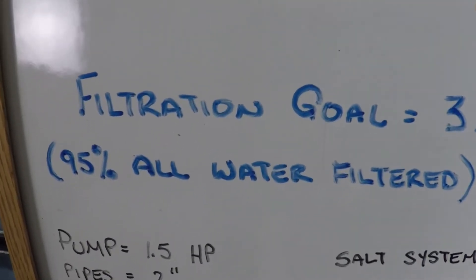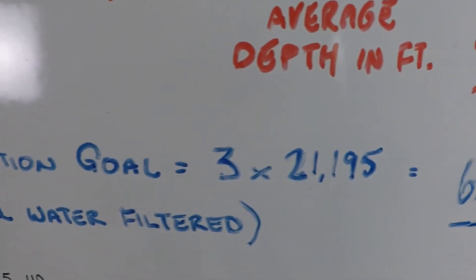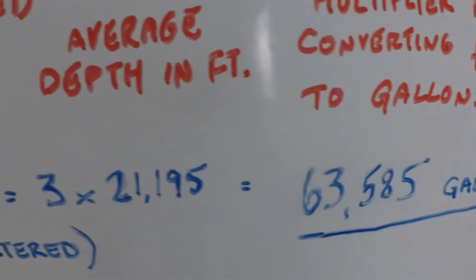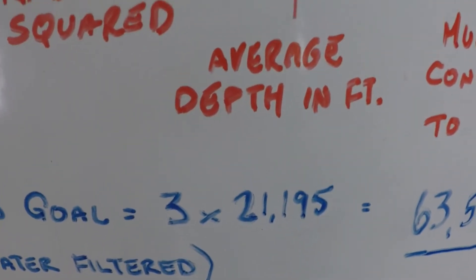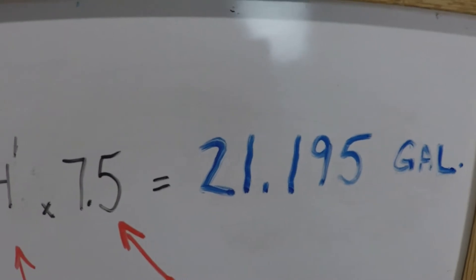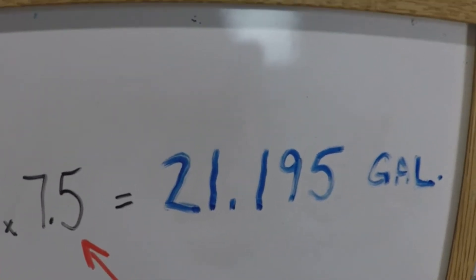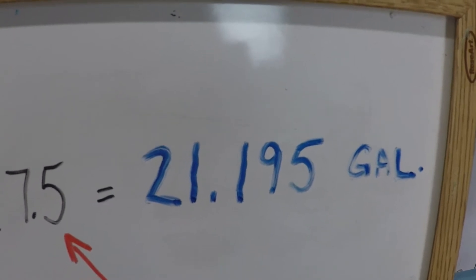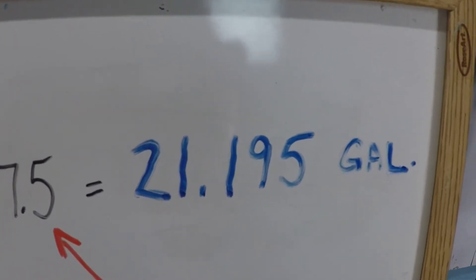The goal that we're going for is 95% of all of the water filtered at least one time. Because if you stop and think about this, it's actually not straightforward at all. The volume is 21,195 and we can pump that much for sure, but did you get all of the water in the pool or did some of the water get filtered twice and some of it hasn't been filtered yet?